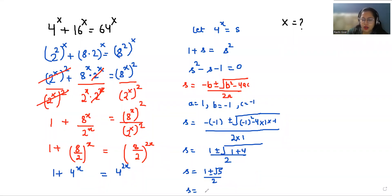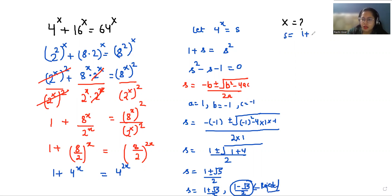So we have two values of s: s equals (1 + √5) / 2 or s equals (1 − √5) / 2. This second value gives a negative answer, so we reject that case and adopt s equals (1 + √5) / 2. Recalling our substitution s = 4^x, we replace it: 4^x equals (1 + √5) / 2.